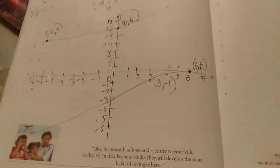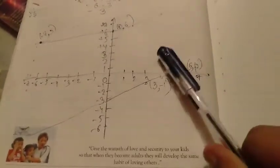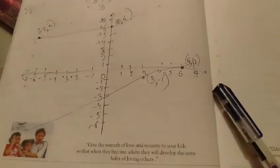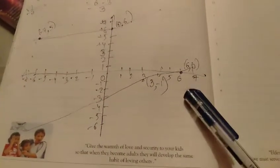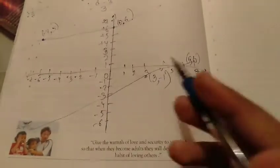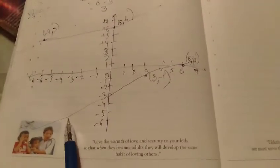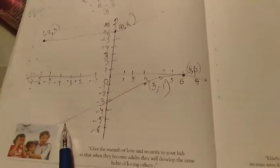These are parallel lines — or rather, they intersect. If we make the graph, we will have lines representing the two equations. Now we will discuss Question Number 2.